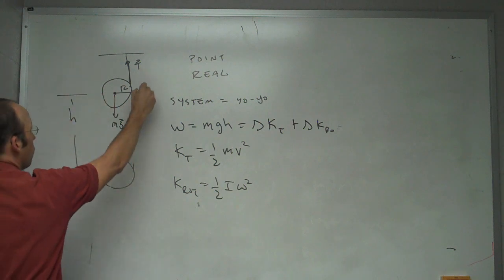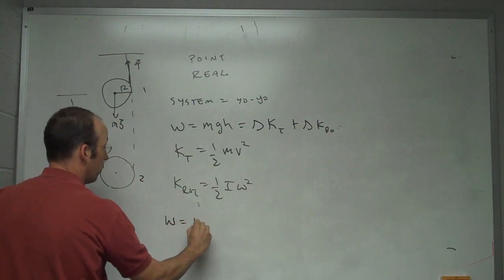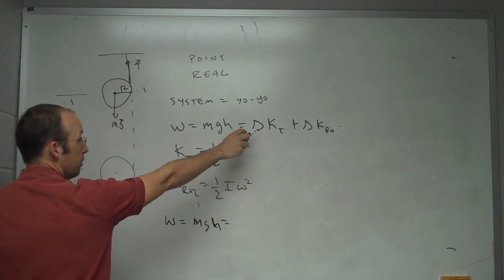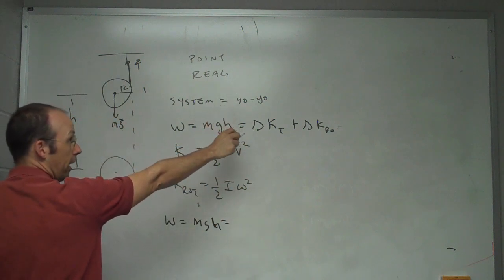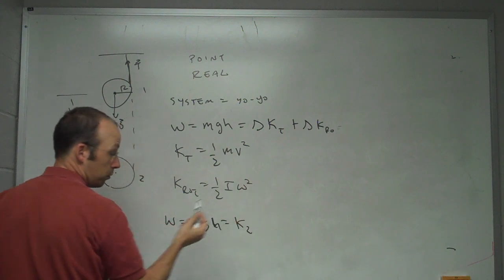Okay, so if I start, let's call this point one and this point two, then I could say work equals mgh. Change in translational kinetics is going to be final minus initial, so it's going to be K2 minus initial, which is zero, plus the final rotational.